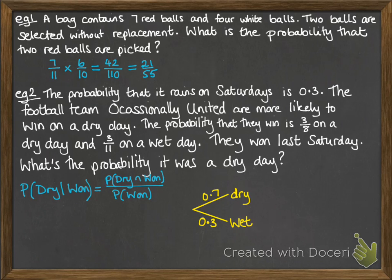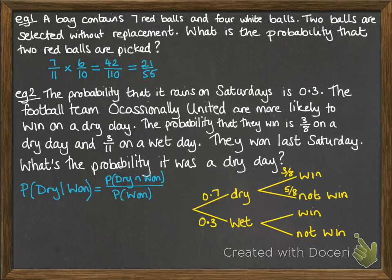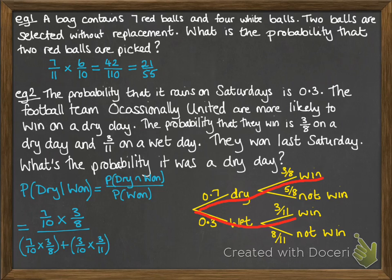We're going to need a tree diagram. It could be a dry day (probability 0.7) or a wet day (probability 0.3). If it's a dry day, the chances they win are three eighths and they don't win are five eighths. If it's a wet day, the chances of winning are three elevenths and not winning are eight elevenths. The probability it was dry and they won is 0.7 times three eighths. The probability they won overall comes from two branches — dry and win, or wet and win — so we add those together. We put that on the bottom of our equation and type it all into the calculator to get the final answer.